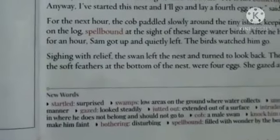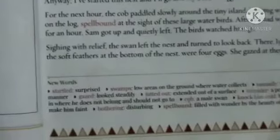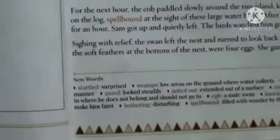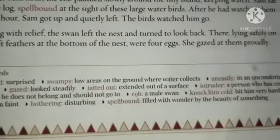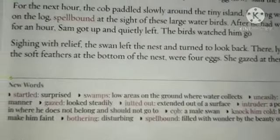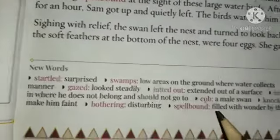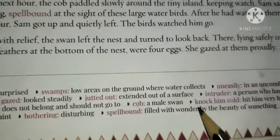Next: 'cob' — a male swan. If a swan is male in gender, that is called a cob. 'Knock cold' means to hit very hard to make someone faint. Look at this — the purple man hit him so hard that he became faint, that is called knocking him cold.